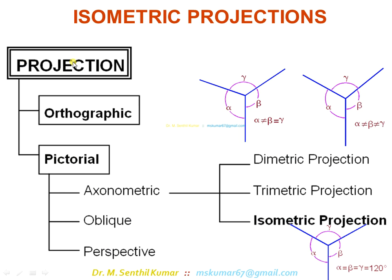Under projection, there are two major divisions: one is orthographic and another is pictorial. Under pictorial, there are three types: axonometric, oblique, and perspective. Under axonometric, there are three types: isometric, trimetric, and dimetric. You have isometric in the syllabus, and perspective is also there. That we will see in the next chapter. This chapter deals with isometric.